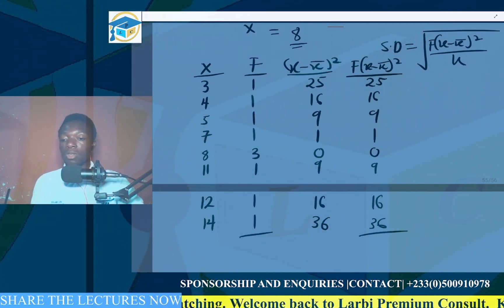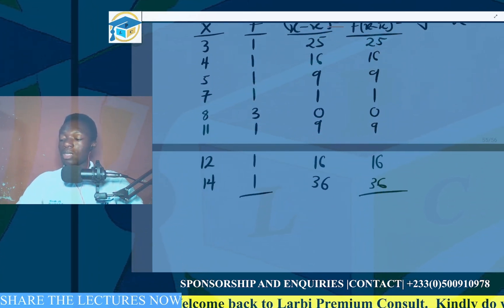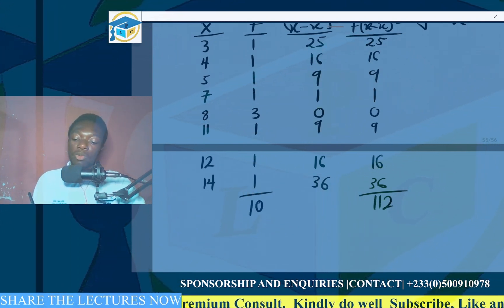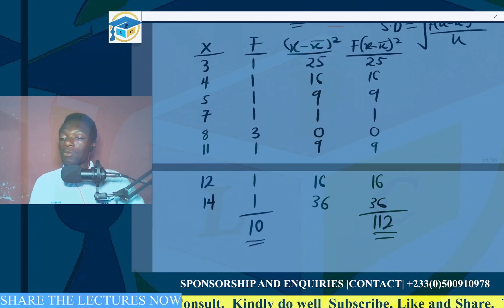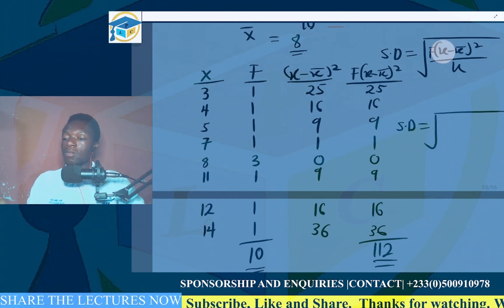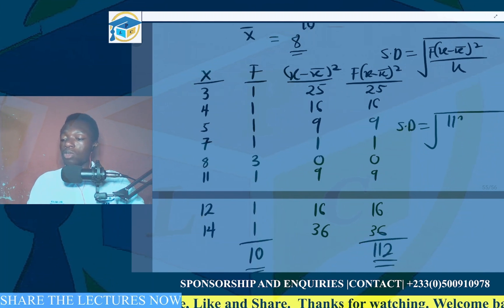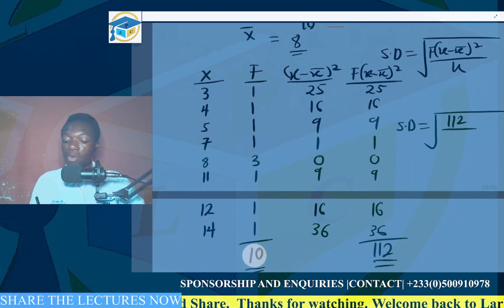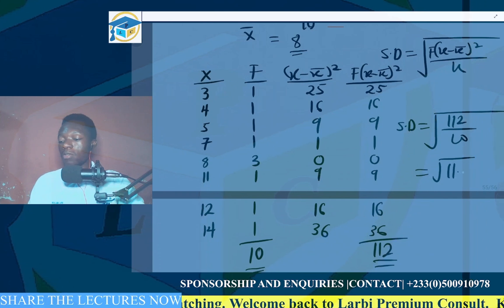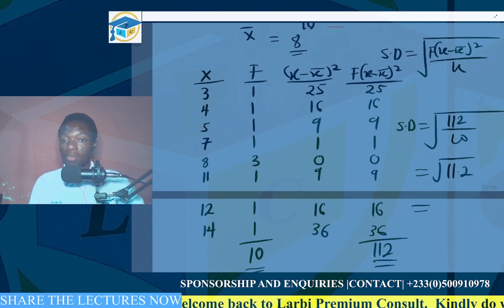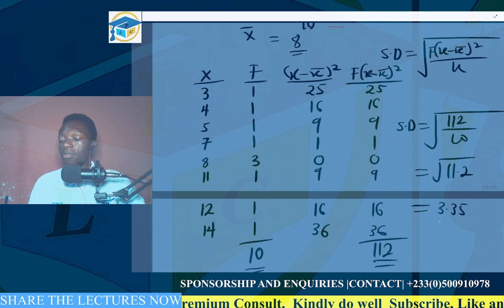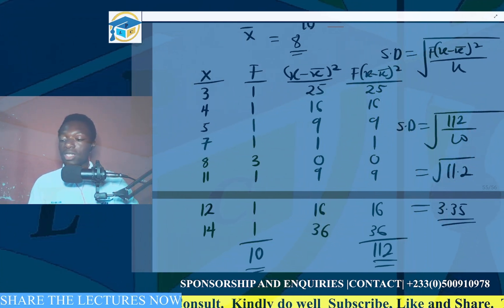We sum the frequency-weighted squared deviations to get 112, and the total frequency is 10. So the standard deviation equals the square root of 112 divided by 10, which is the square root of 11.2, giving approximately 3.35. This is our standard deviation for this dataset.